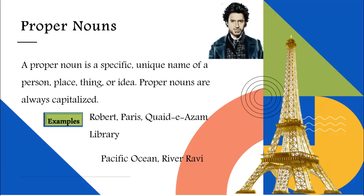All names are proper nouns, including your name and my name. Notice how your first, middle, and last name are all capitalized. They are proper nouns because they indicate a specific, particular person — that is you. For example, the words Robert, Paris, and Kaidiazm Library are proper nouns.